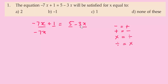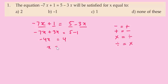Here we move minus 3x from RHS to LHS, so it becomes plus 3x. Moving 1 to the other side gives minus 1. So minus 7x plus 3x equals minus 4x, and minus 4x equals 4, giving x equal to minus 1.